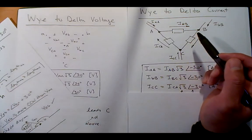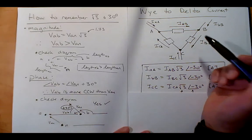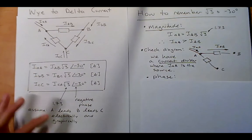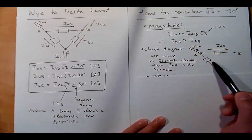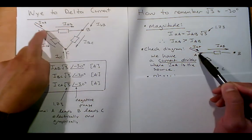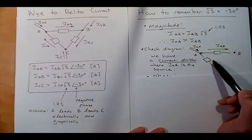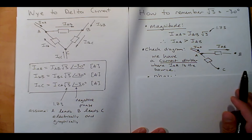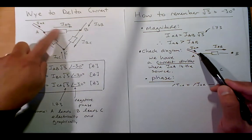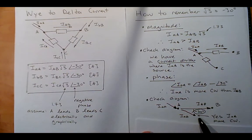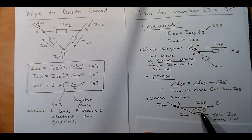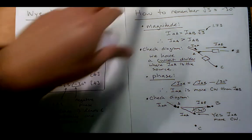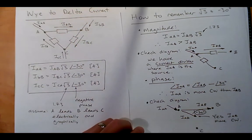The line current is bigger by root 3, and we're assuming A leads B leads C. How do I remember that? Looking at a branch, you can see current coming in and breaking off — dividing. If it's dividing, I'd assume the incoming line current is bigger than the branch line-to-line current by sqrt(3). For the phase, looking at the arrow directions, this arrow is pointed more clockwise than IAB, so negative 30 degrees. That's a sneaky way to remember, but you can always re-derive it.